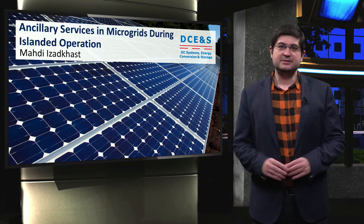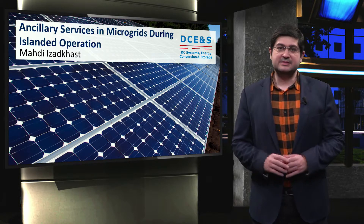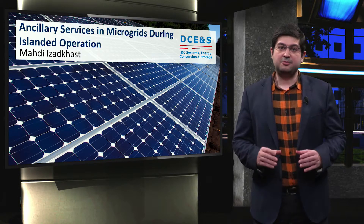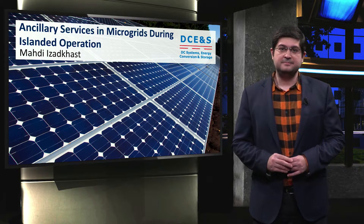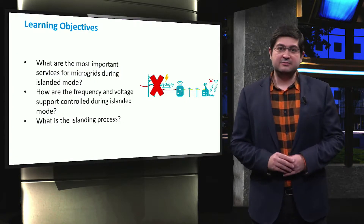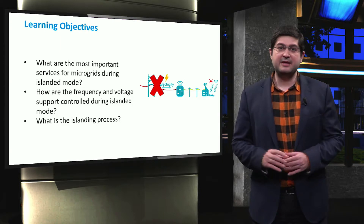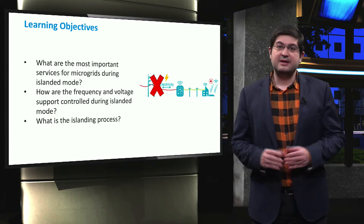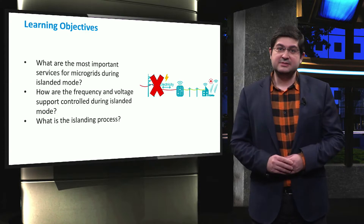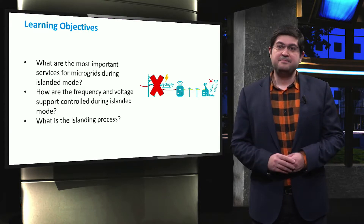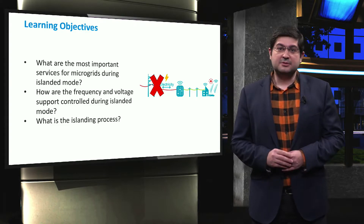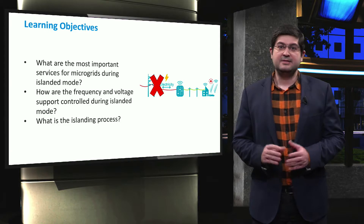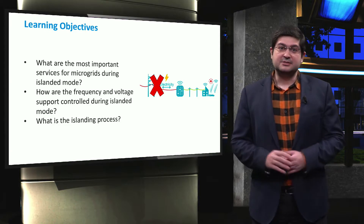In this video, we address the ancillary services in microgrids which are provided during the islanded mode. The main learning objectives will fall under three main questions. Firstly, what are the most important electricity services for microgrids during the islanded mode? Secondly, how are frequency and voltage support provided during the islanded operation mode? Thirdly, what is the islanding process?